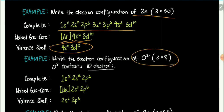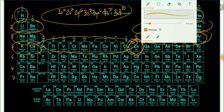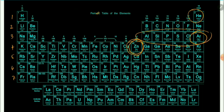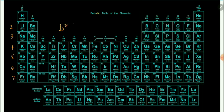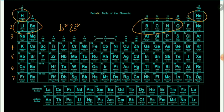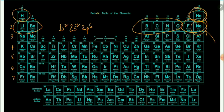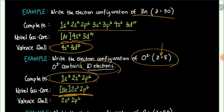Next we have the oxide ion — atomic number z equals 8 (oxygen), but with 10 electrons due to the 2- charge. So the electron configuration is based on 10 electrons: 1s2, 2s2, 2p6. The last noble gas before oxide is helium, so the noble gas core configuration is [He] 2s2 2p6. The valence shell electron configuration is 2s2 2p6.